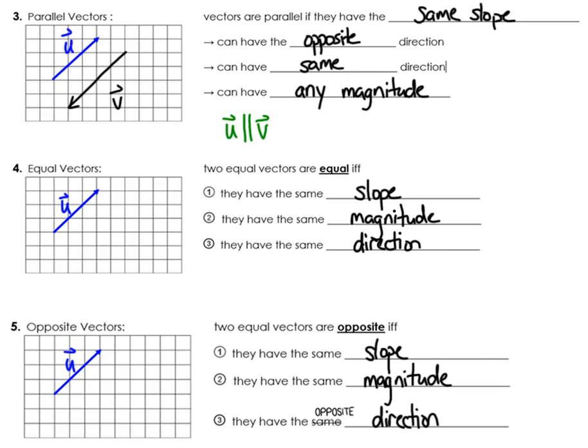Equal vectors would be what you would think they would be the same vector. When I say the same vector I mean they have the same slope, they have the same magnitude and they have the same direction.